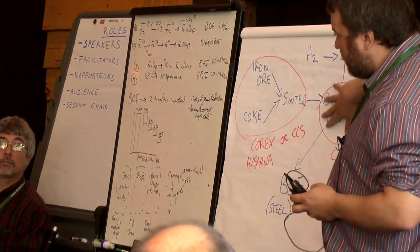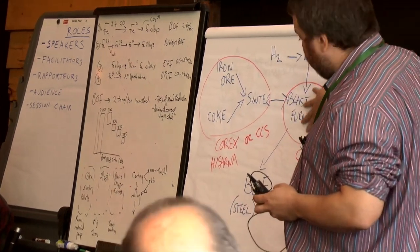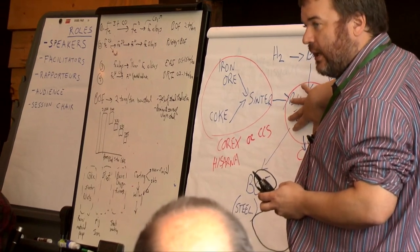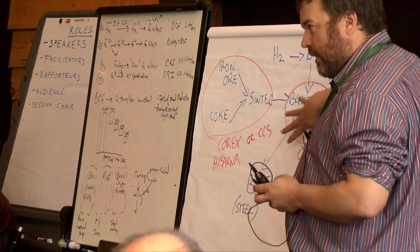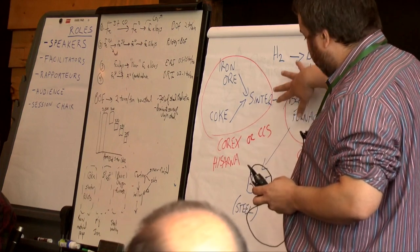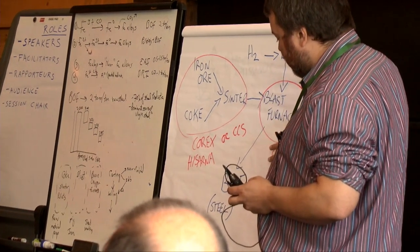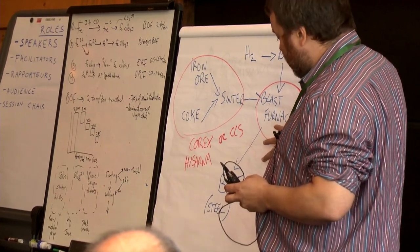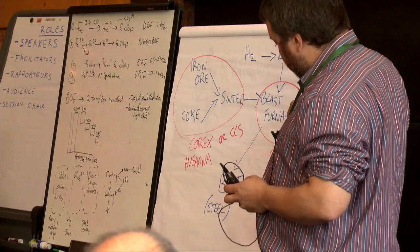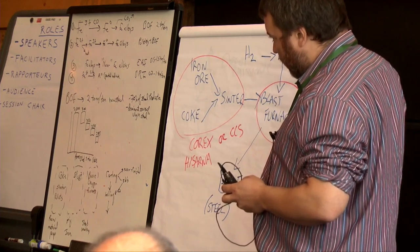The blast furnace, this side of things, this is well-known technology and they don't really know how to get away with it. They're thinking about getting ways to get rid of this, but the easiest way to decarbonize this is to do CCS on this. Take the CO2 that you've got coming out from the process and strip it away.